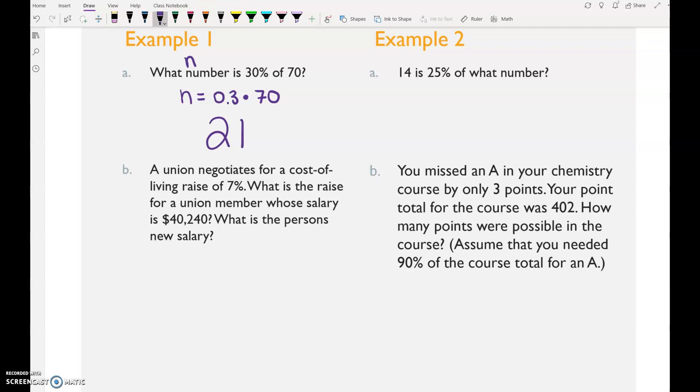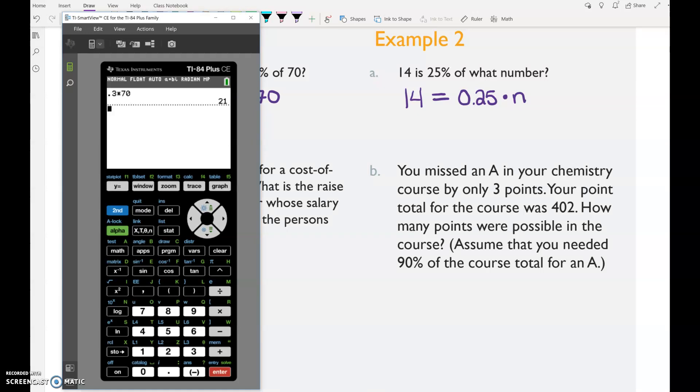Let's go over to example 2A. 14 is 25% of what number? 14 is equals, 25% of multiply what number, and you can use any letter you want to. How would you figure out that one? Divide. 14 divided by 0.25 is 56.